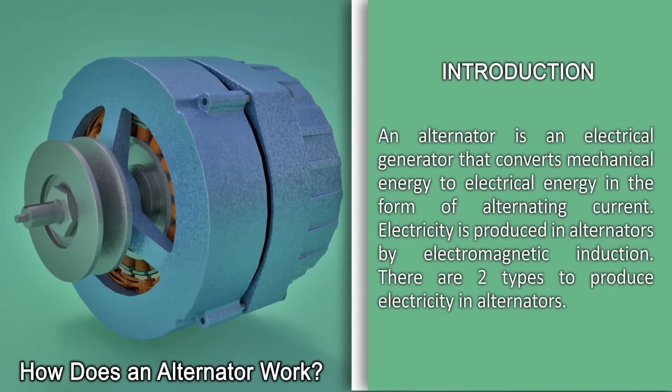An alternator is an electrical generator that converts mechanical energy to electrical energy in the form of alternating current. Electricity is produced in alternators by electromagnetic induction. There are two types to produce electricity in alternators.